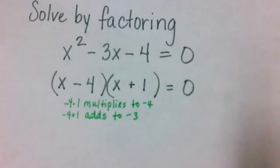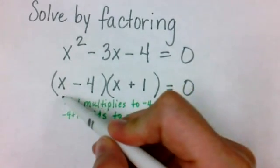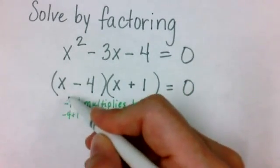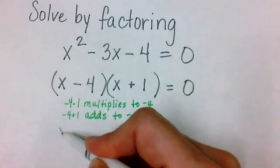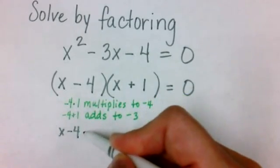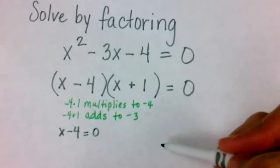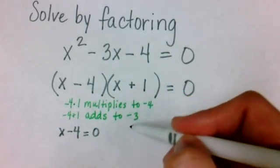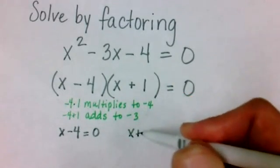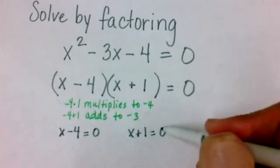We're ready to do the solving part. We're going to take each of our parentheses and set them equal to 0. So I'm going to take the x minus 4 that I had in parentheses and set it equal to 0. Then I'm going to take the x plus 1 that I had in the second parentheses and set it equal to 0.